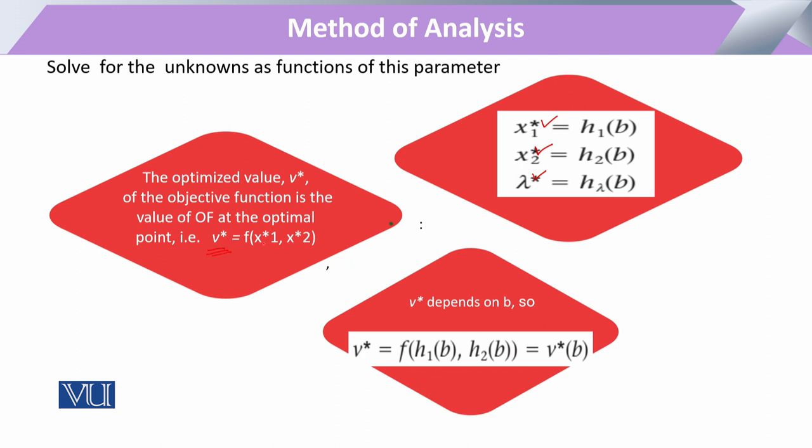वो condition जो हमारी objective function को optimized करे, उसे optimized value कहते हैं। Objective function की value जो optimal point पे होगी, उसको हम asterisk (*) से show करते हैं — V* जो है, यह function है x1*, x2* का। यह V* depends upon those values जो हम directly implicit function या envelope theorem के through calculate करते हैं।